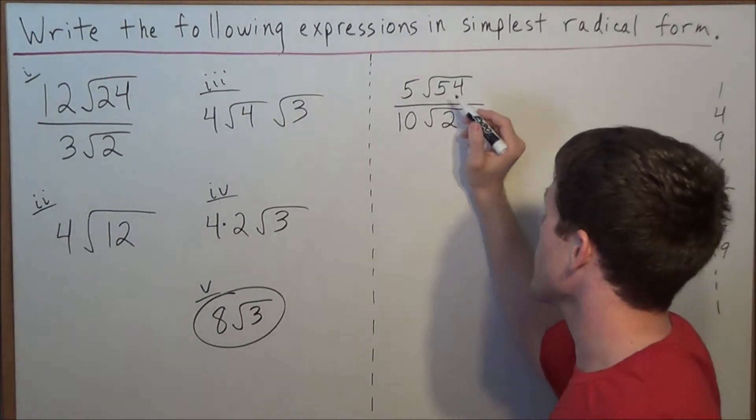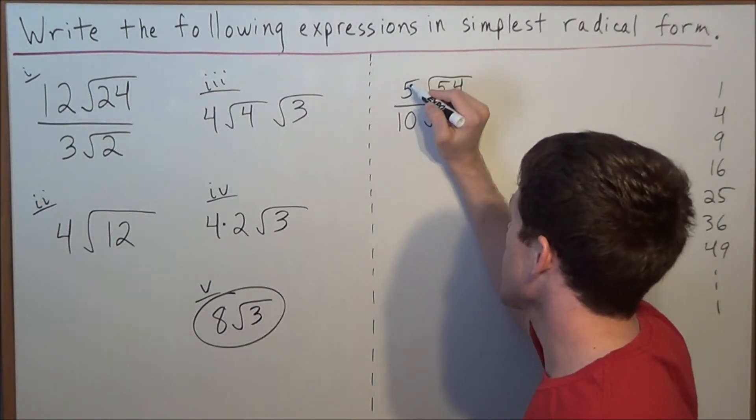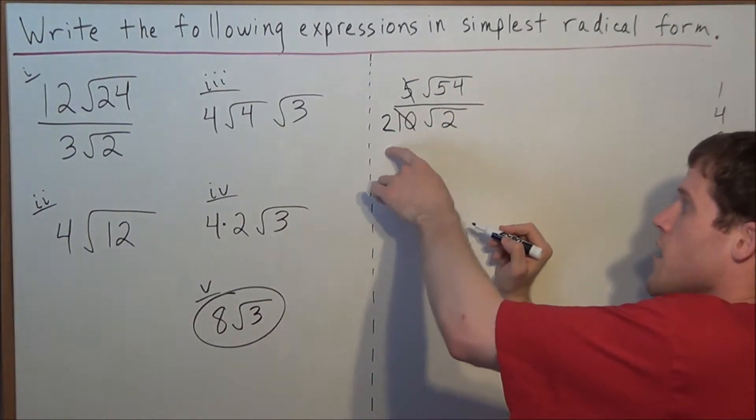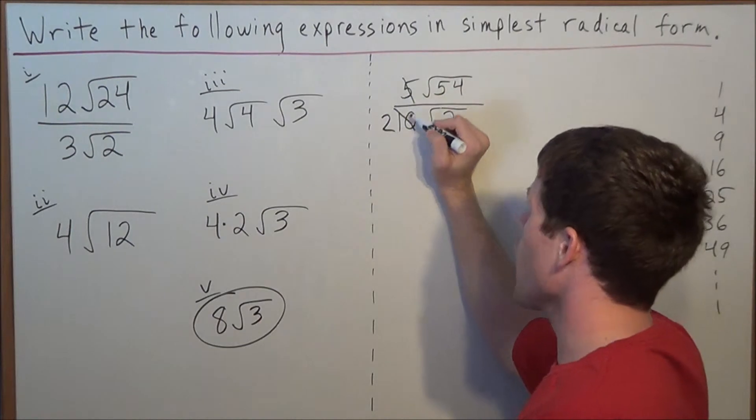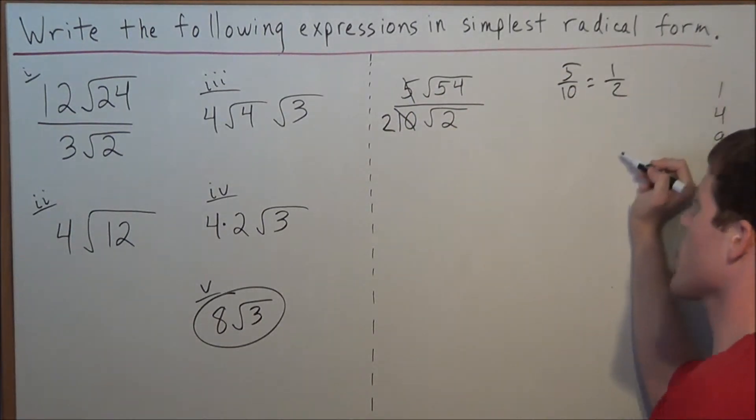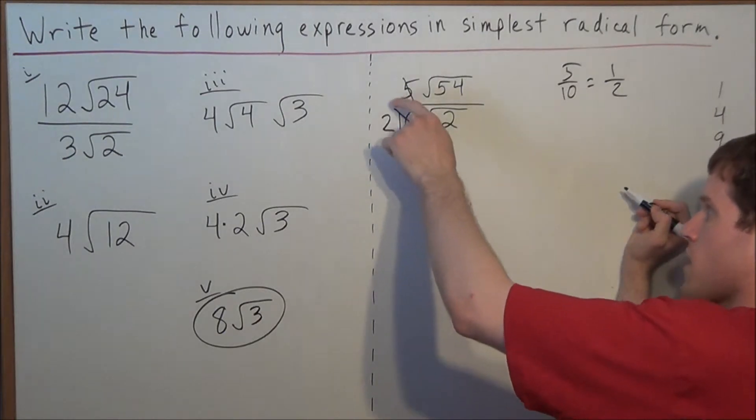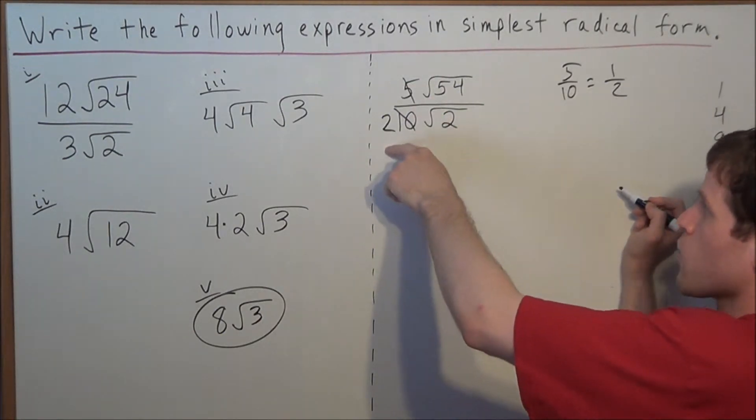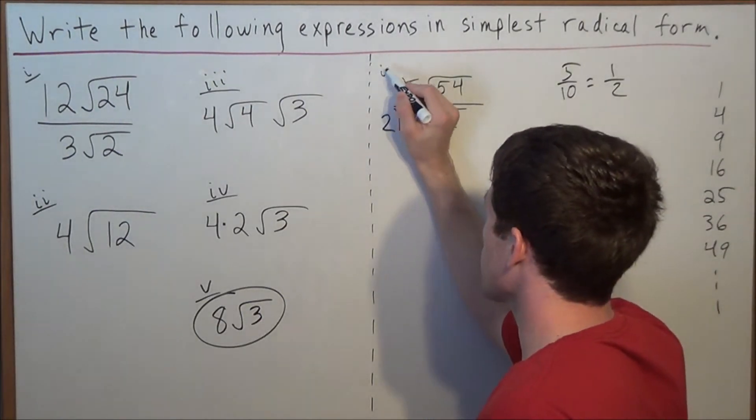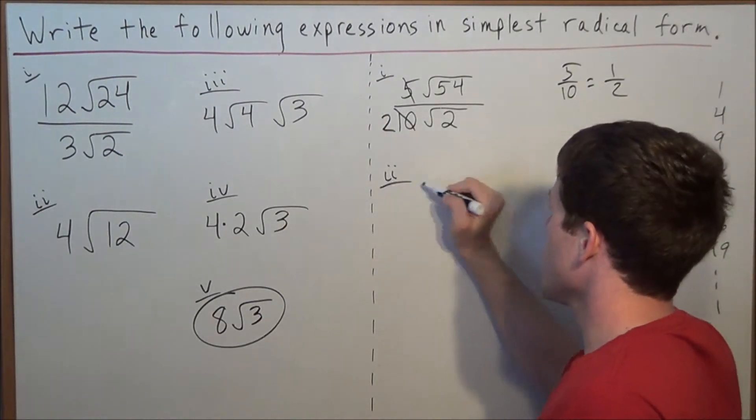So we could cross out 5 and 10, and we'll replace the 10 with the 2, because 5 over 10, in general, reduces to 1 half. So this is why we're going to cross out the 5 and 10 and replace the 10 with a 2. So now, as we move towards the next line, we could call this 1. For line 2, we're dividing 54 divided by 2.